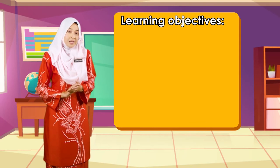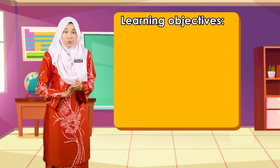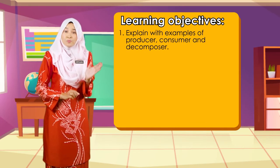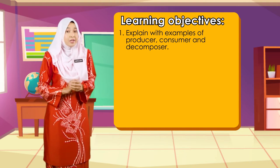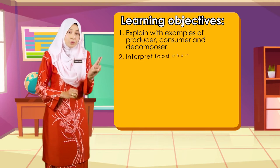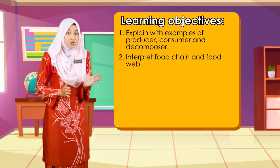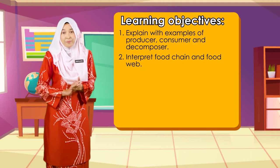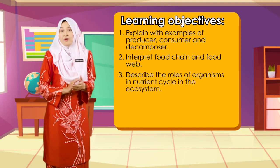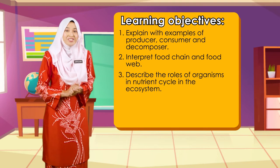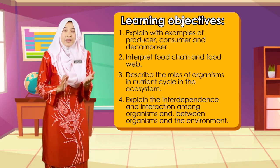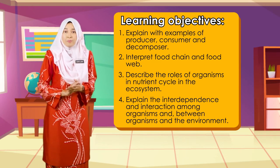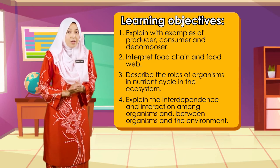By the end of today's lesson, you will be able to: 1. Explain with examples of producer, consumer, and decomposer. 2. Interpret the food chain and the food web. 3. Describe the roles of organisms in a nutrient cycle in the ecosystem. 4. Explain the interdependence and interaction among organisms and between organisms and the environment.